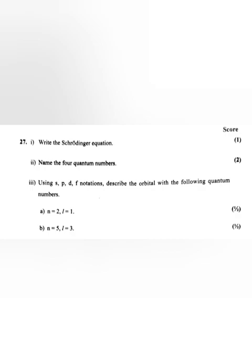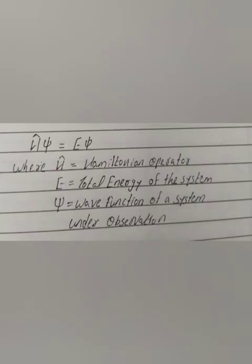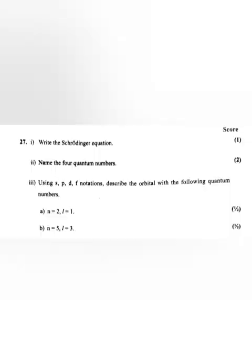Question 27: Write the Schrödinger equation. Answer: H bar psi equals E psi, where H bar is equal to Hamiltonian operator, E is equal to total energy of the system, psi is equal to wave function of a system under observation. Here the system can be a single electron or an atom or a molecule.